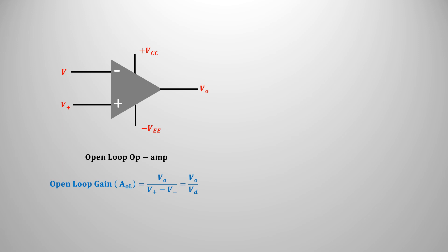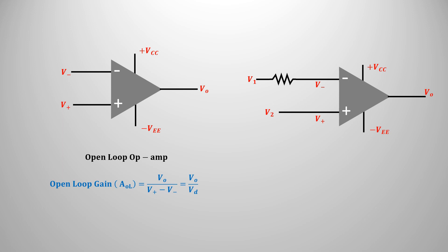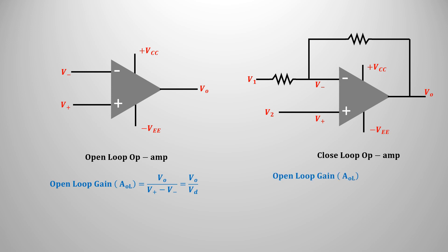If the input terminal of the operational amplifier is fed back with the output, it is called a closed-loop operational amplifier. Such an operational amplifier has two types of gain: an open-loop gain, which is the ratio of the output voltage and the difference between the internal input voltages.